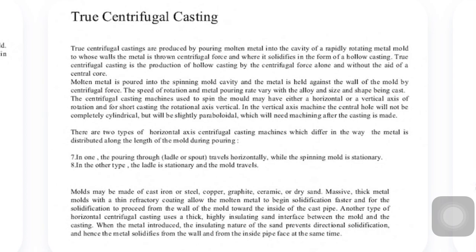True centrifugal castings are produced by pouring molten metal into the cavity of a rapidly rotating metal mold, to whose wall the metal is thrown by centrifugal force, and where it solidifies in the form of a hollow casting. In this process, liquid metal is poured into the rapidly rotating metal mold; the metal solidifies gradually on the wall due to centrifugal force and forms a hollow casting.